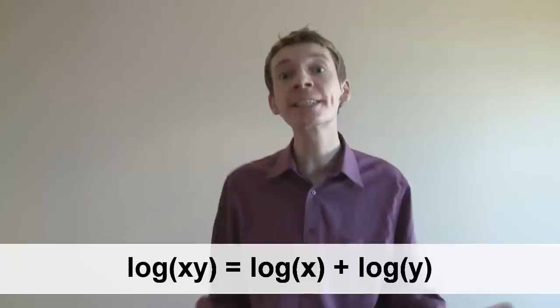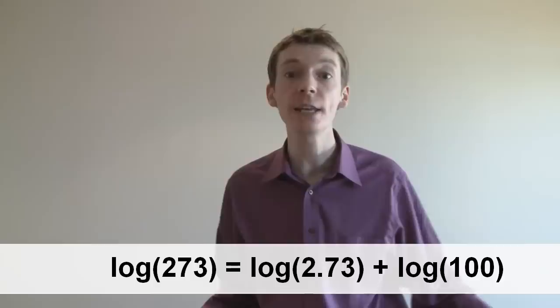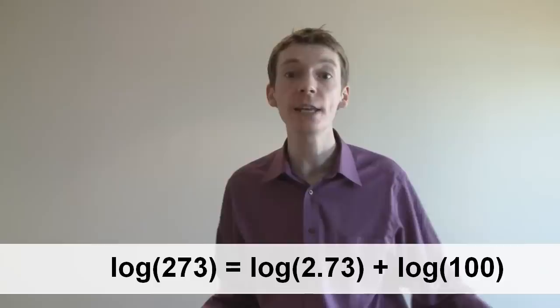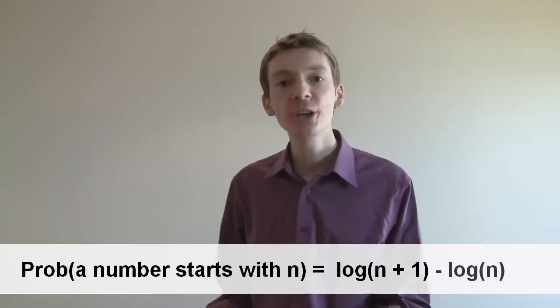Now log tables only needed to go between 1 and 9 because if you had something larger like the log of 273, then that was just the log of 2.73 plus the log of 100. And the log of 100 is 2. Now Newcomb and Benford noticed that the probability that a number starts with the digit n was the log of n plus 1 minus the log of n. But they couldn't explain why.